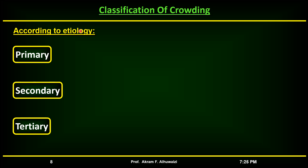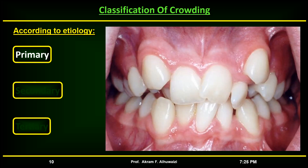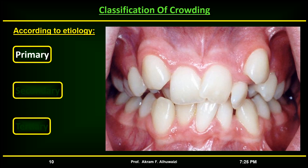From an etiological point of view, we can classify crowding as primary, secondary, and tertiary. Primary crowding is a hereditary type determined genetically, caused by disproportionate size between teeth and jaws — meaning larger teeth than the jaws. Malalignment of the anterior teeth is characteristic of this type of crowding.